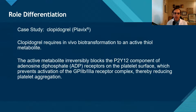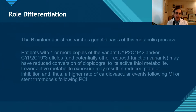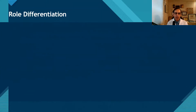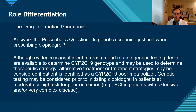Let's do a case to emphasize this point. We have clopidogrel — Plavix — a drug that requires biotransformation before it's active. The bioinformaticist is interested in studying the human genome and figuring out how this occurs on a genetic basis. The drug information pharmacist will use that research, and when asked a question about screening for a patient who will receive clopidogrel, they'll do further research and provide an answer to the prescriber about that drug information question.